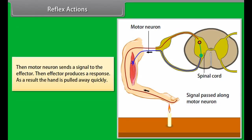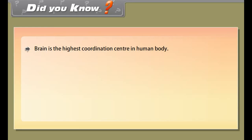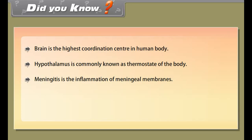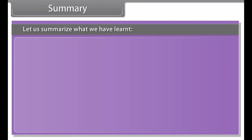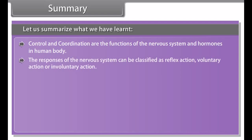The spinal cord controls reflex actions and conducts messages between different parts of the body and the brain. The peripheral nervous system consists of cranial nerves (arising from the brain) and spinal nerves (arising from the spinal cord), and assists in transmitting information between the central nervous system and the rest of the body. Involuntary activities like breathing and beating of the heart take place by the coordinated efforts of the medulla oblongata and the autonomic nervous system.